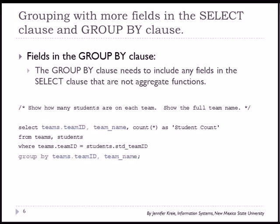Looking at a variation on our first example, I'm going to show the team ID and the team name and I've got the aggregate function to count the students. The FROM clause has 2 tables: teams and students. The WHERE clause joins the team table to the student table on the primary key foreign key relationship.